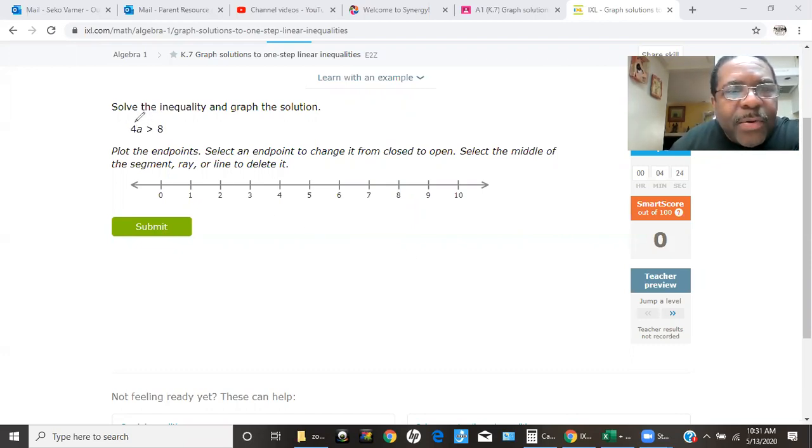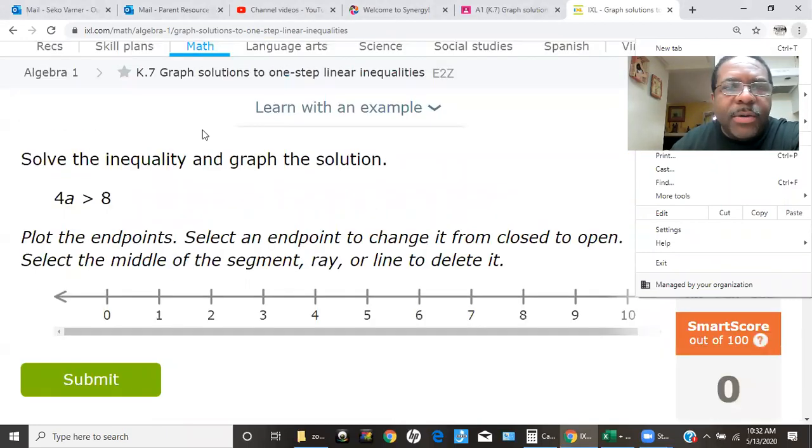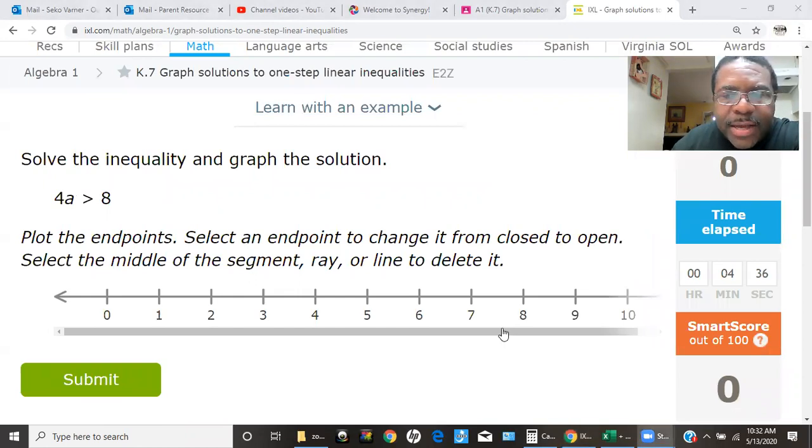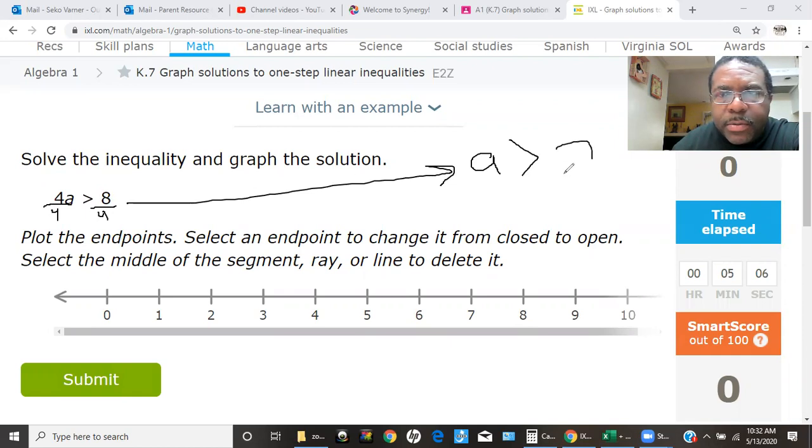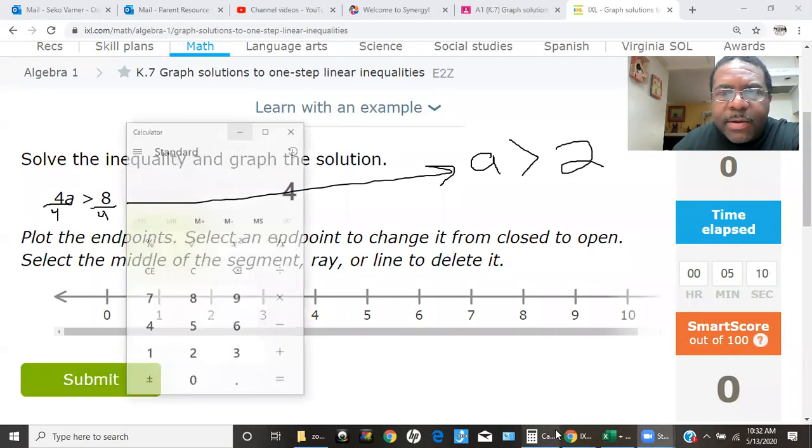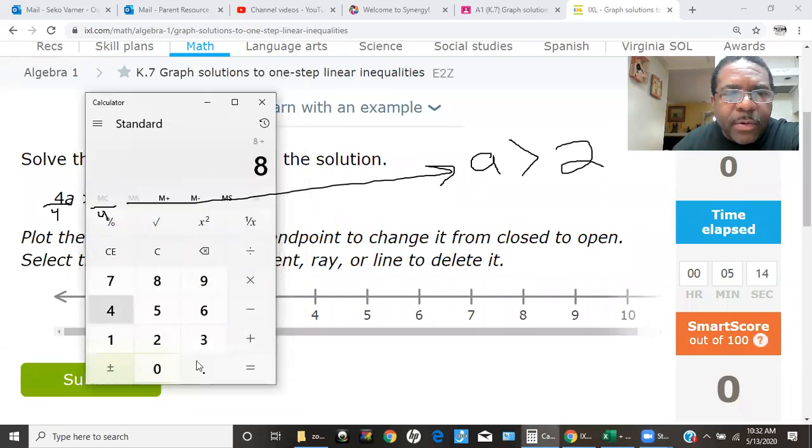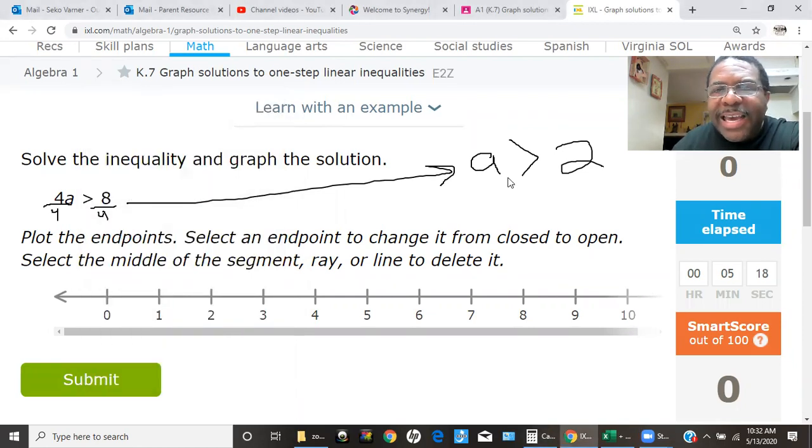What we want to do here is 4a is actually four times a. So what we want to do is make sure that we have the a by itself. We're going to divide 4a and 8 by 4. That's going to give us, and I'm going to take the answer right over here. That's going to leave us with a is greater than, and 8 divided by 4 would be 2.